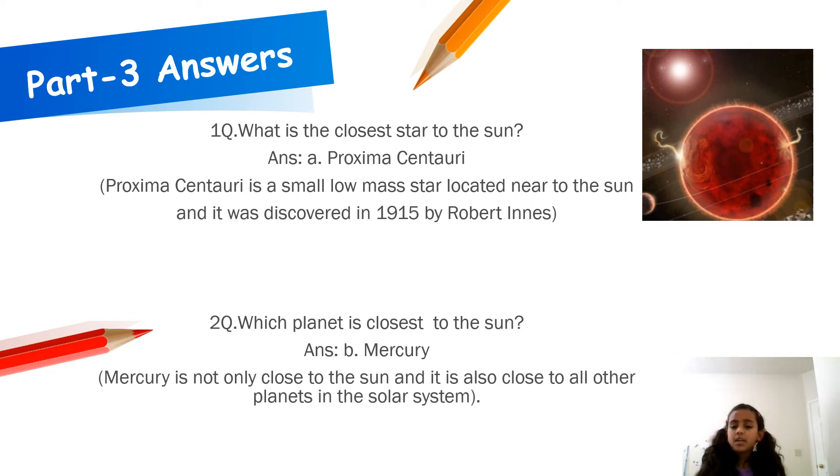Question 2. Which planet is closest to the Sun? Answer: Mercury. Mercury is not only closest to the Sun, it is also close to all other planets in the solar system.